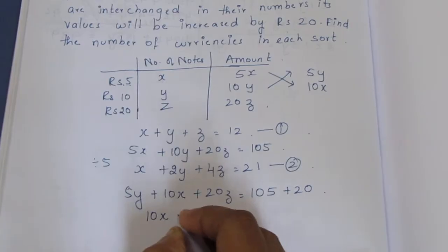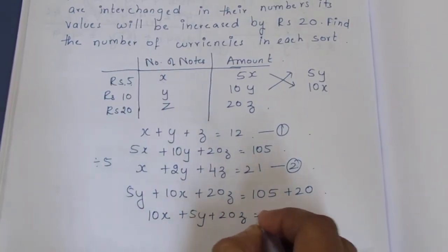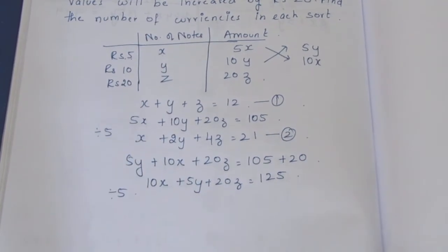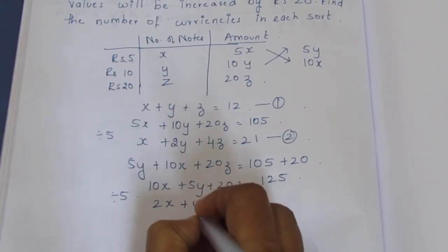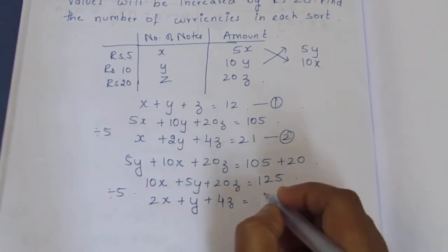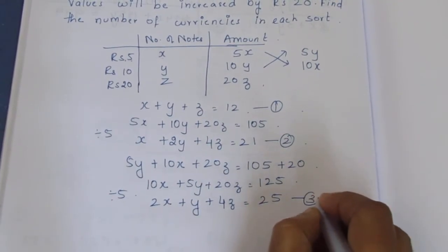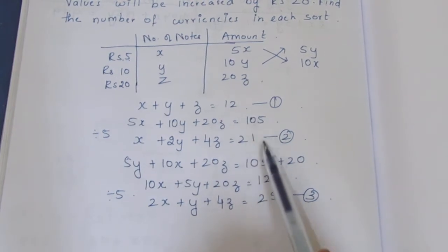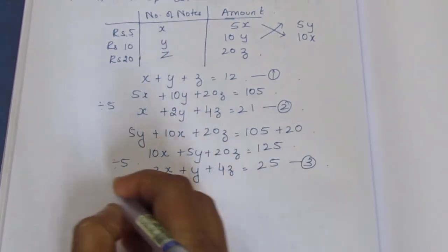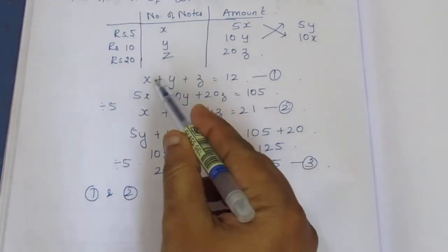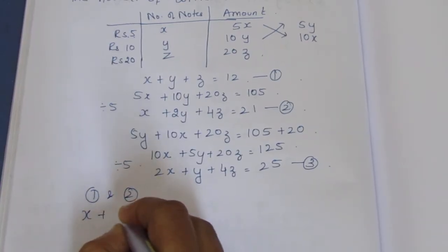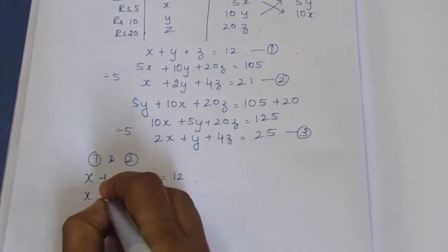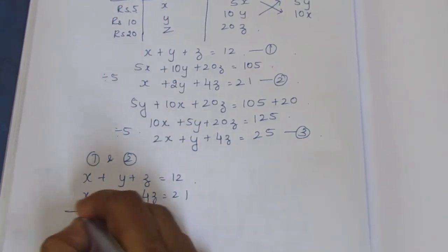So x is the first variable: 10x plus 5y plus 20z is equal to 125. Dividing by 5 gives 2x plus y plus 4z equal to 25. Now solving equations 1 and 2: x cancels, x plus y plus z equals 12. Next: x plus 2y plus 4z equals 21, sign change.